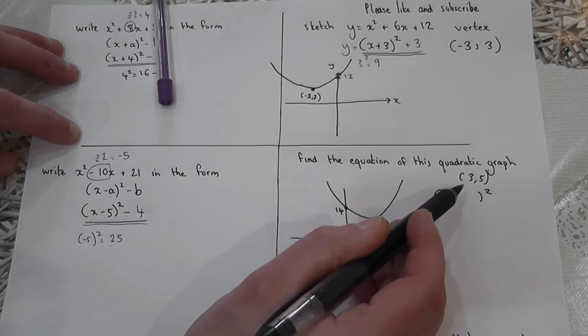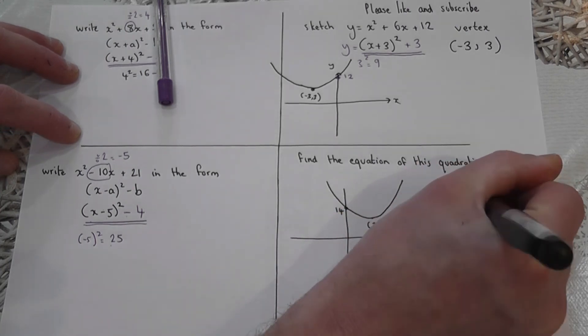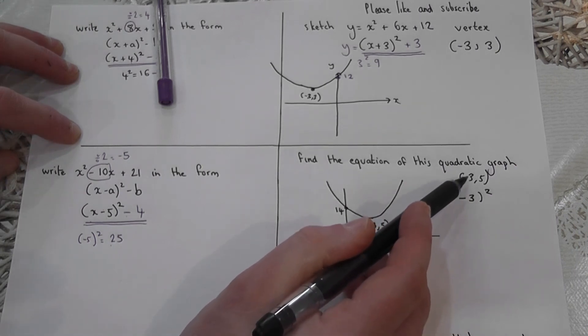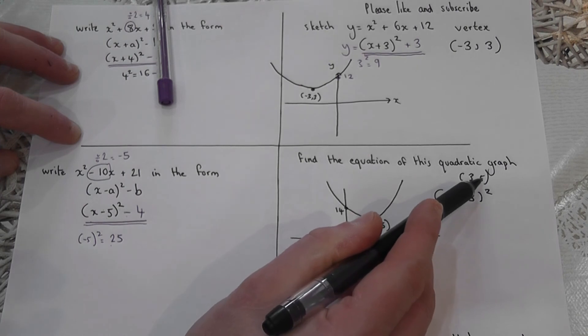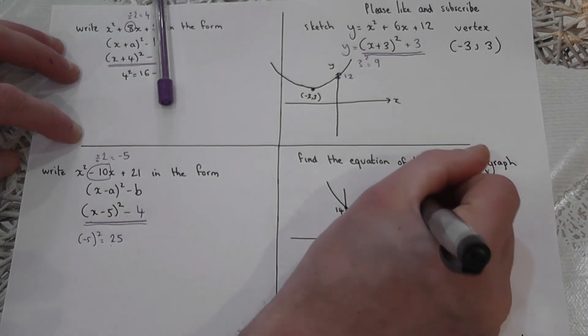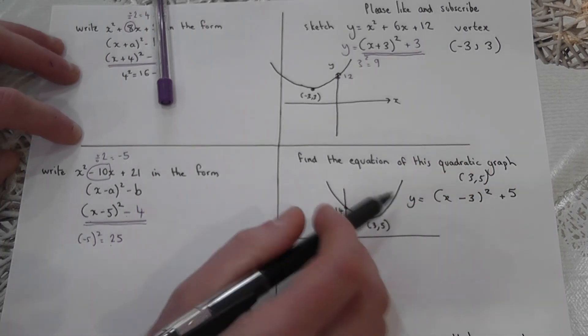So there's a plus three here, so it becomes a negative three in the bracket. The first number sign always changes. But the second number stays the same. So the equation is y equals x minus three squared plus five.